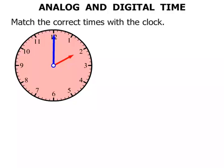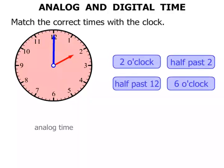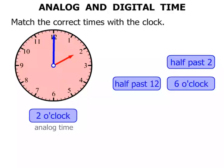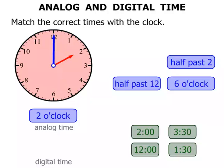This is our first clock. Big hand pointing straight up, shorter hand pointing at the two. So in terms of analog time, which of those would you choose? Hopefully you said two o'clock. Of course you did. In terms of digital time, how do we write two o'clock? We write it like this.